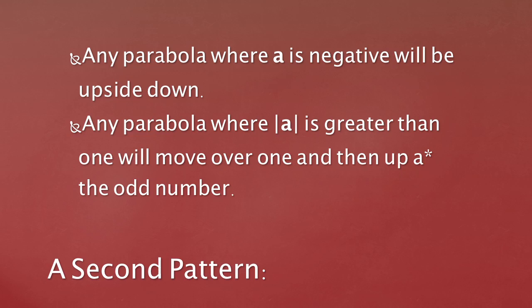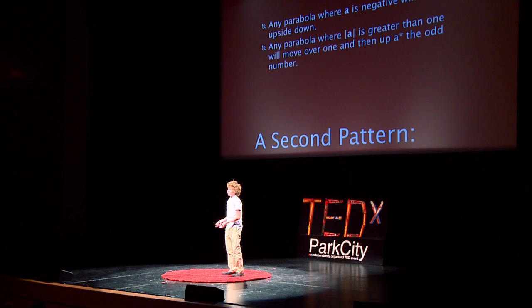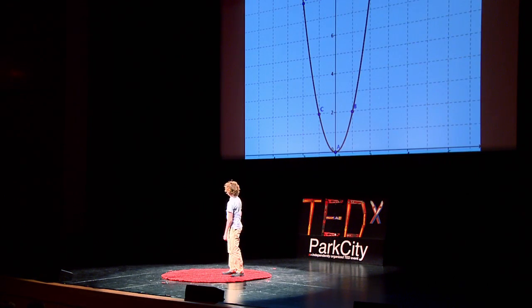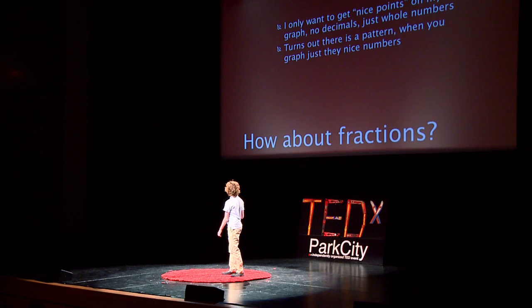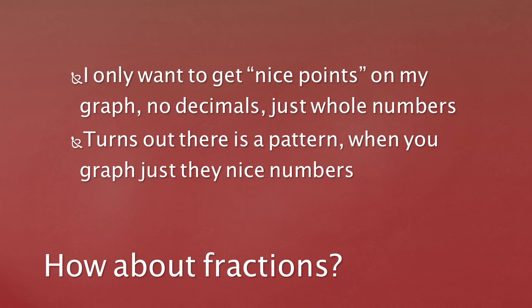But what if A isn't 1? Some parabolas don't have the same rate of growth. Well, if A is, say, 2, then you just multiply the points by 2. So you move over 1, up 2; over 1, up 6; over 1, up 10 — which is the same 1, 3, 5 pattern, just times by 2. For fractions, it will still work if you multiply by A, but it won't give nice points.